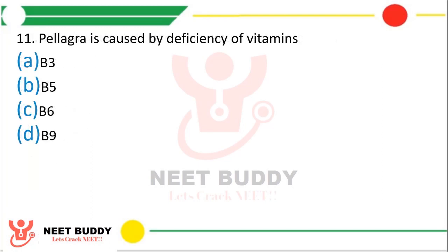Question 11. Pellagra is caused by deficiency of which vitamin? B3, B5, B6, or B9? The correct answer is option a, Vitamin B3.